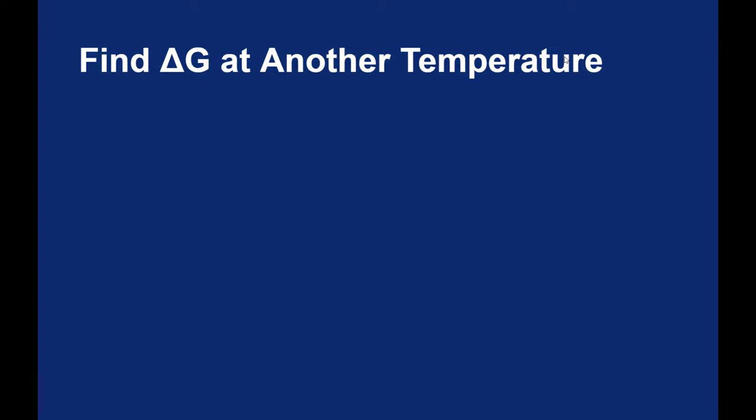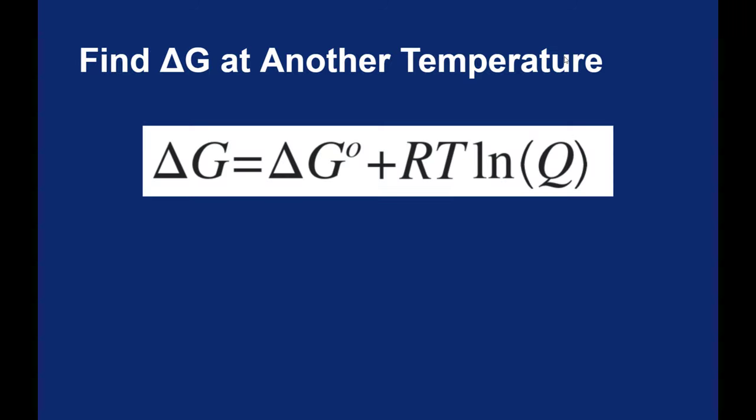There's an equation given in the text for finding ΔG at other temperatures. And the equation looks like this: to find the ΔG at some temperature, you could take the standard ΔG value and add RT ln(Q). T we know, T is temperature, that's in Kelvin.